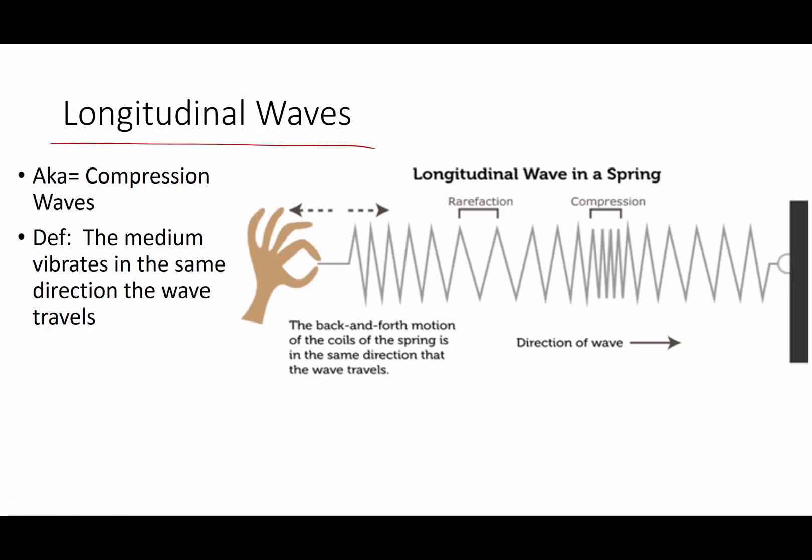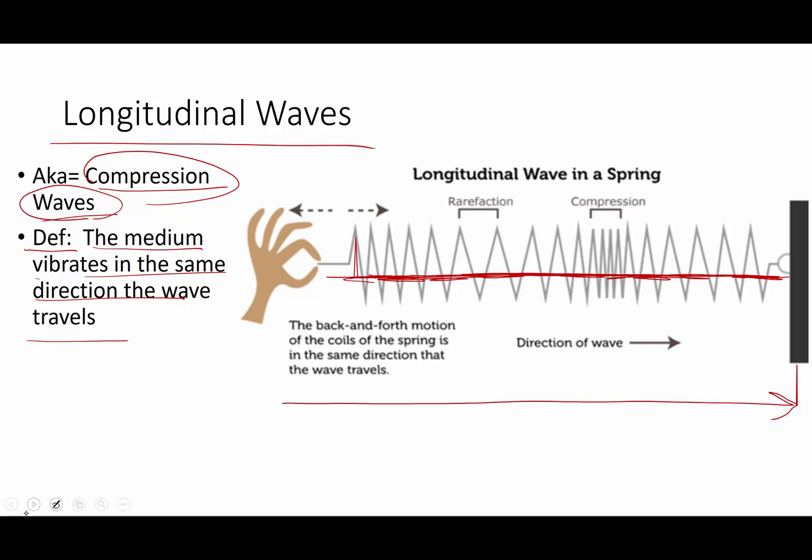The second kind of wave is referred to as a longitudinal wave. It is also called a compression wave. The two names are pretty much interchangeable depending upon the author or the instructor you're working with. Here's the definition of a longitudinal wave. In a longitudinal wave, the wave medium vibrates in the same direction that the wave travels. So again, the wave is traveling from left to right, but this time the individual particles are oscillating left to right. They are oscillating in the same direction that a wave travels. They are not going up and down like transverse waves. They are actually oscillating back and forth in the same direction that the wave itself is moving.